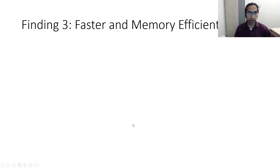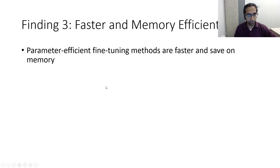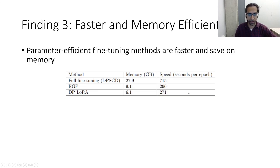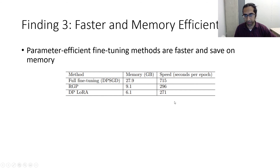The final finding is that parameter-efficient methods are faster and save memory. Full fine-tuning with DPSGD takes a lot of memory and time per epoch, whereas DP fine-tuning with LoRA takes much less memory and is much faster at the same time.